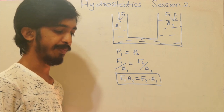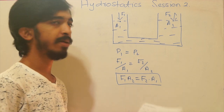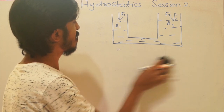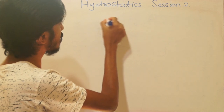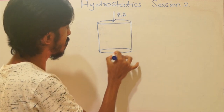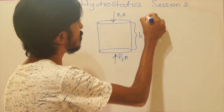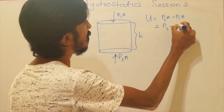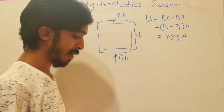The next is Archimedes' principle: the upthrust acting on a solid that is completely or partially immersed in a fluid equals the weight of the fluid displaced. To prove this theoretically, take a cylindrical object of area A and height h. The force on the top is P1·A downward and on the bottom is P2·A upward. The net upthrust is (P2 − P1)·A = h·ρg·A.